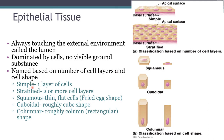With epithelia, there are typically two names. The first name is either simple or stratified — this tells you the number of cell layers. Simple means one layer of cells; stratified means two or more layers. The second part of the name tells you the shape of the cells touching the lumen at what's called the apical surface. You'll have squamous cells, which are thin flat cells that look like fried eggs; cuboidal cells, which are roughly cube-shaped; and columnar cells, which are roughly column or rectangular shaped.